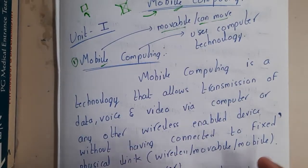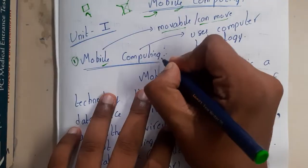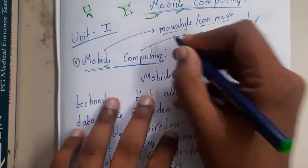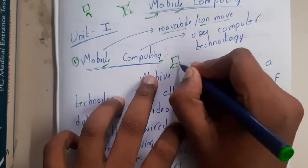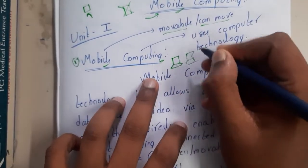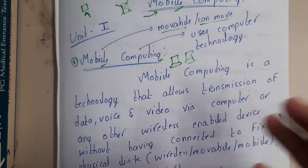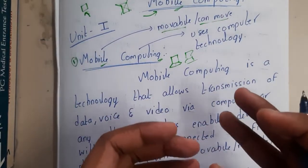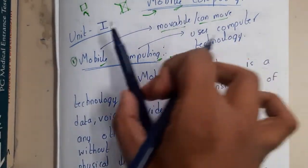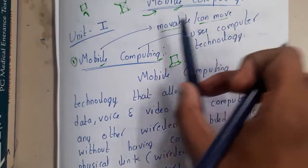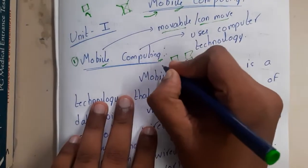Computing is a type of computer technology. Basically, our systems — your computer or your laptop — have some computation power, in terms of RAM, a processor, and all those things. So if you integrate all those things into something which is movable, something you can carry from one place to another, that is nothing but mobile computing.